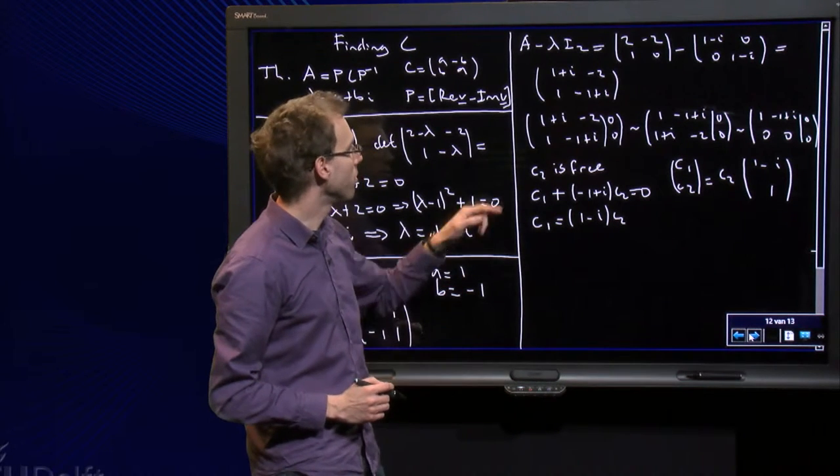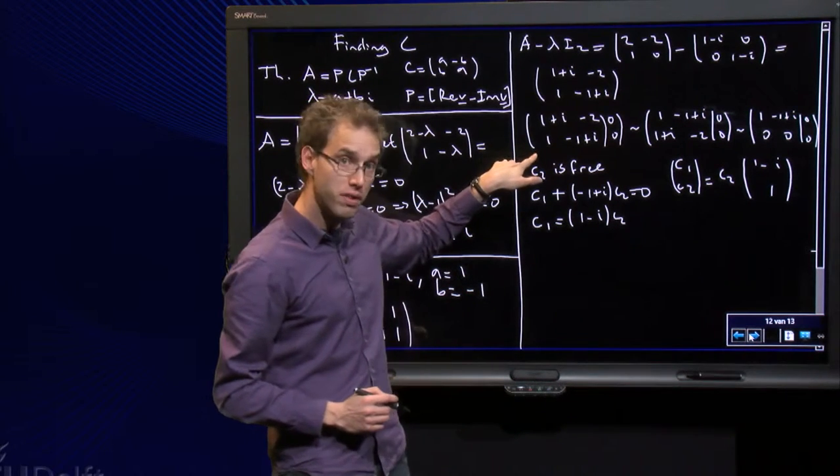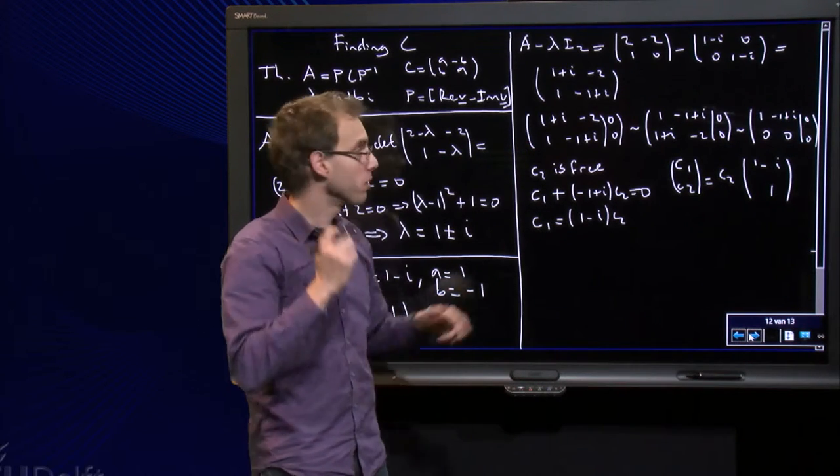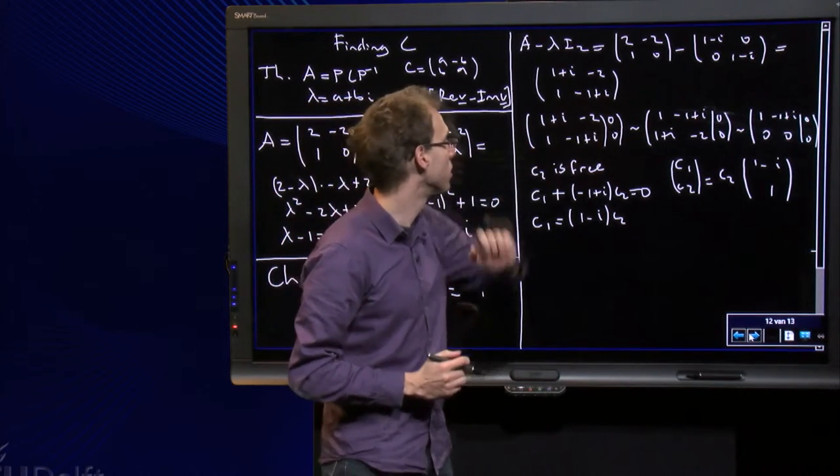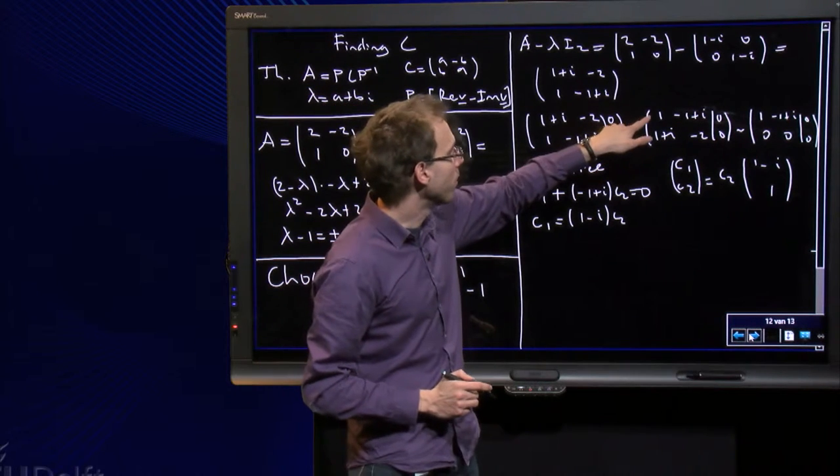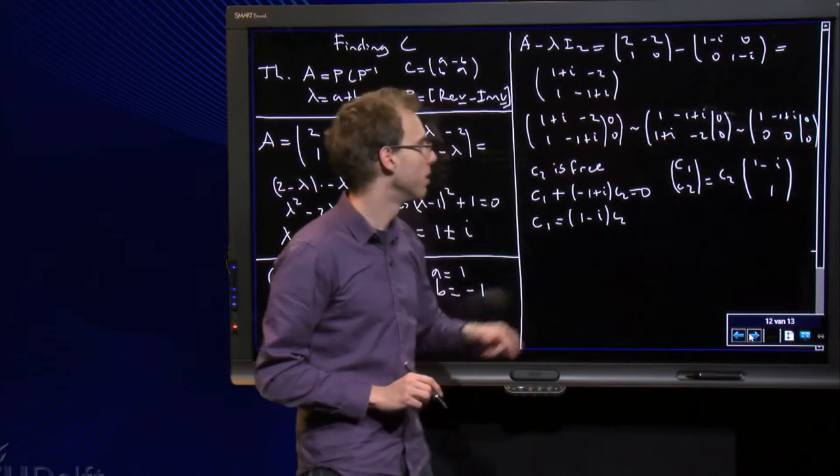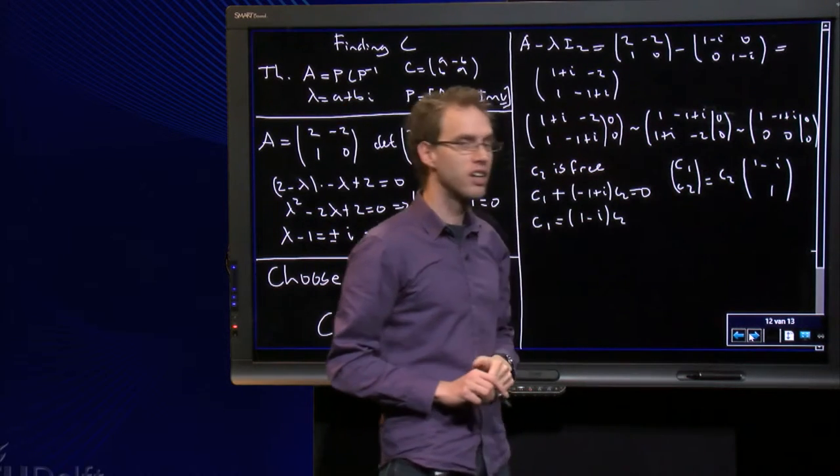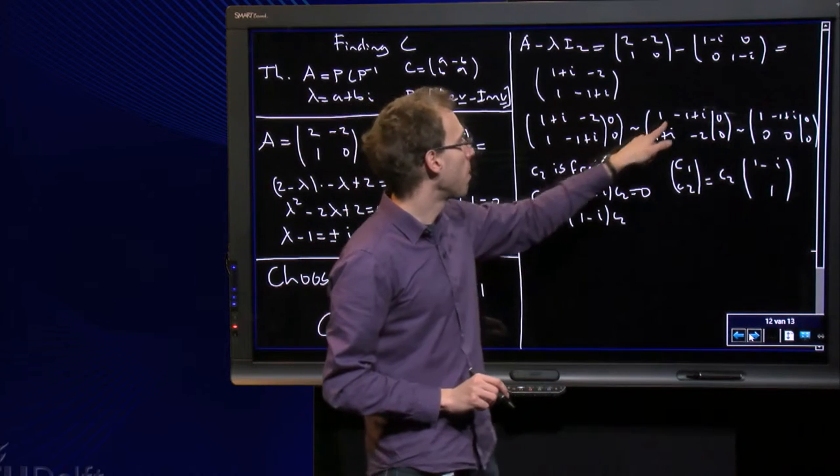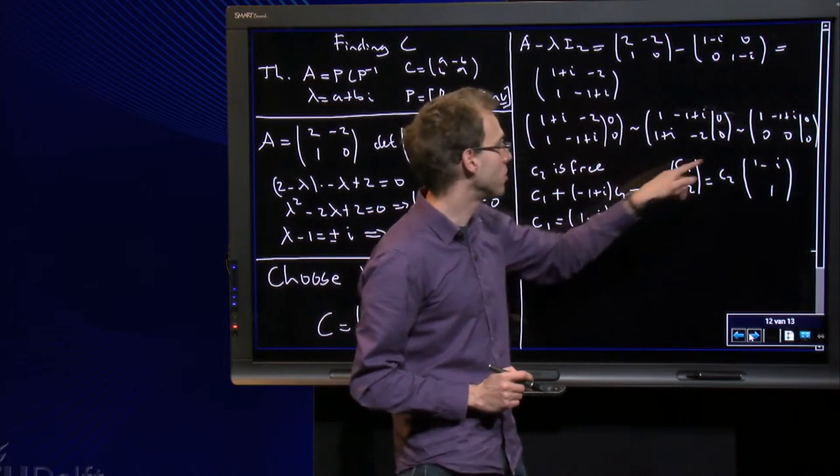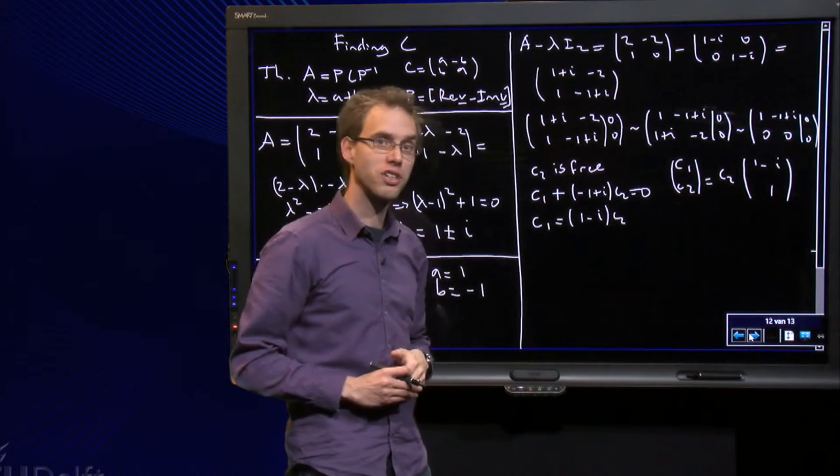And we have to do row reduction. First it's convenient to have a 1 in the left corner, so we switch the first two rows. And then I take (1+i) times the first row and subtract that from the second row. Then I get the zero over there, but (1+i) times (-1+i) equals -2, so the -2 cancels out as well.